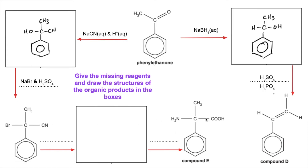We need to create a COOH carboxylic acid group. The way I've done it is substitution of the bromine for the NH2 group first — you would do that by reacting it with a mixture of ammonia and ethanol. It's really important that you get both of those in there.